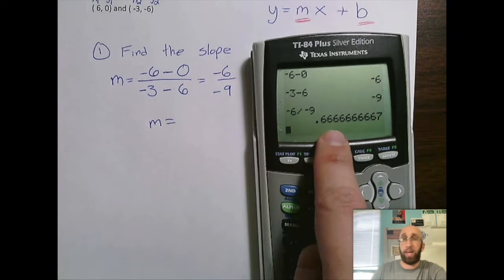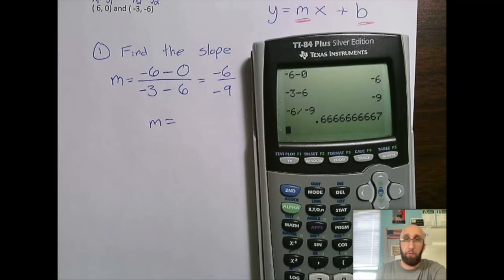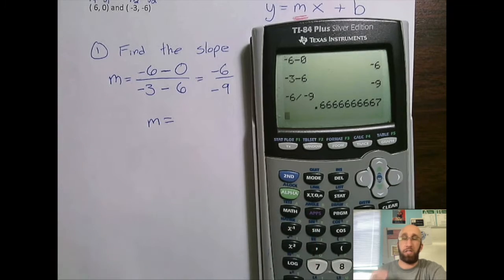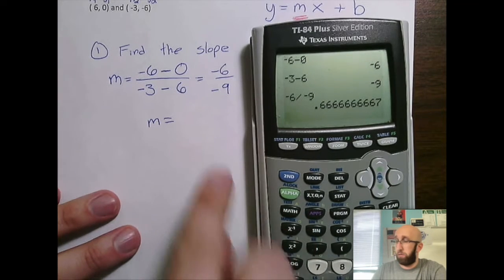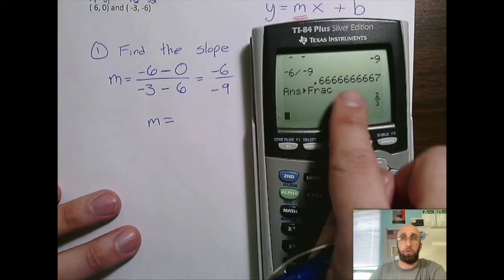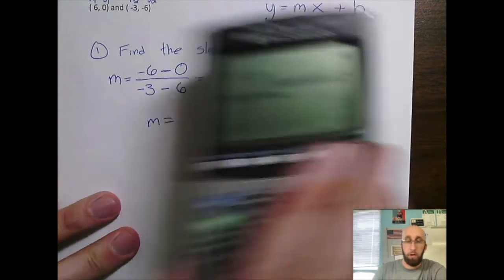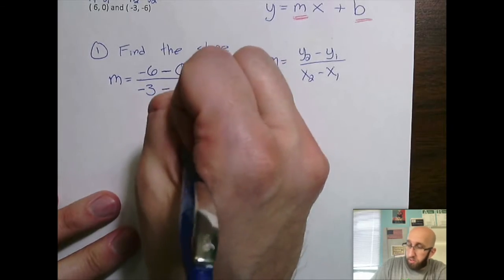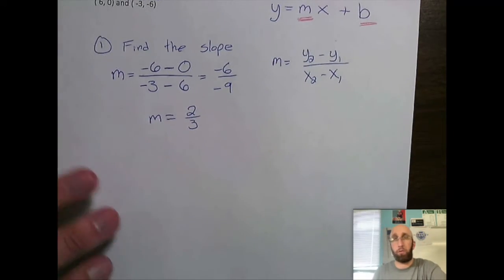So if I hit enter in a calculator, it's just going to kick back a decimal for you. But graphing calculators, if you're someone that doesn't have the skill at reducing fractions, go ahead and hit math, enter, enter. And it is going to reduce that fraction for you to 2 thirds, 2 thirds or 2 over 3.